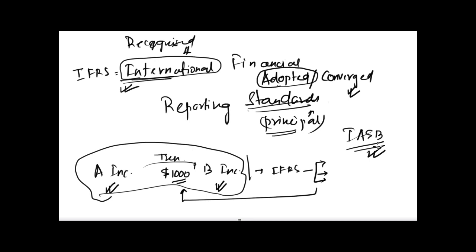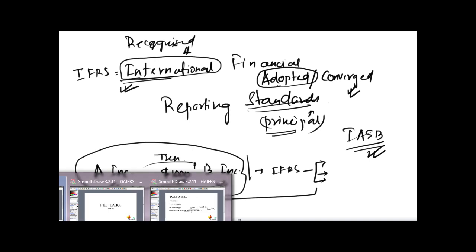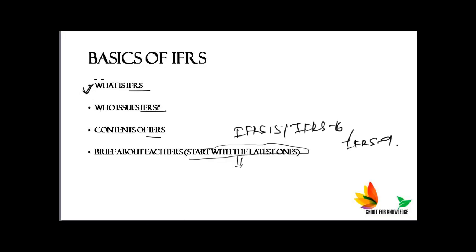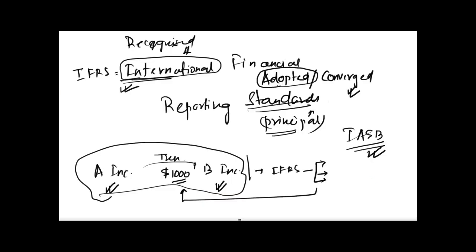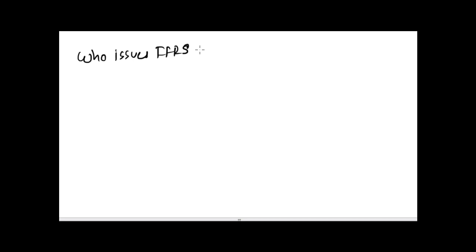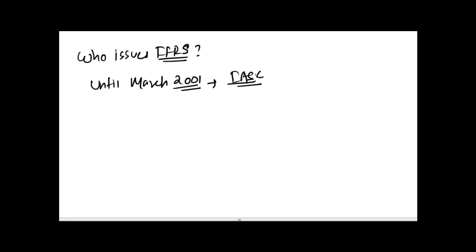The next question is: who issues IFRS? Until March 2001, there was a body called IASC — the International Accounting Standards Committee. This body was responsible for issuing standards up to 31st March 2001.